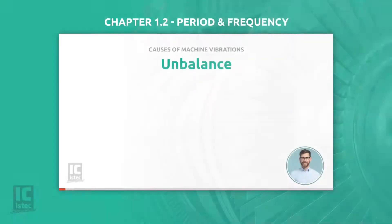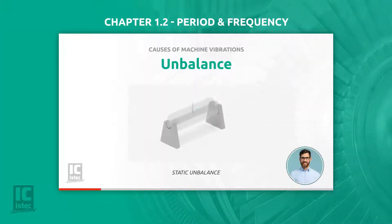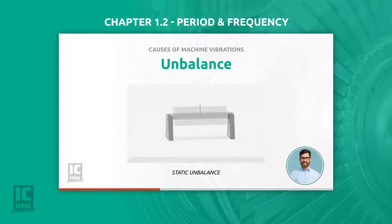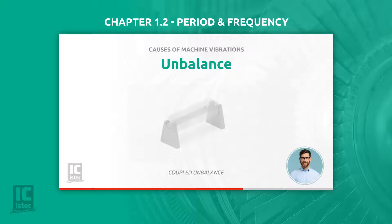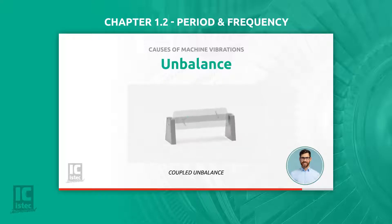We distinguish three types of unbalance. Static unbalance is when the center of gravity axis is not in line with the center of rotation, and the heavy spot and the center of gravity are in the same plane. Coupled unbalance appears when a rotating object has two or more unbalanced masses in different planes.